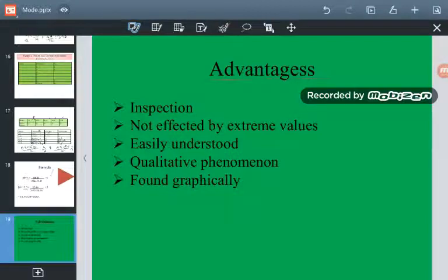There will be certain advantages as well as disadvantages of the mode. First advantage is that it can be obtained by inspection. If you inspect, you can tell what will be the mode. Next is that it is not affected by extreme values. It can be easily understood. It can be used to describe qualitative phenomena like intelligence, beauty. Next, the value of the mode can also be found graphically.